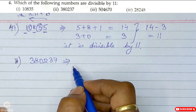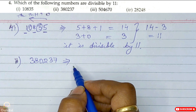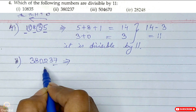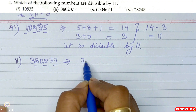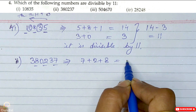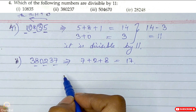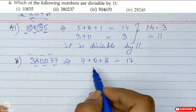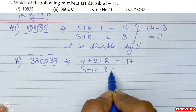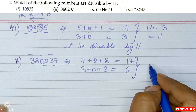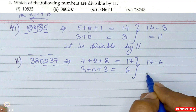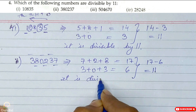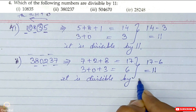For 380237, the digits at odd places starting from the unit place are 7, 2, and 8. So 7 plus 2 plus 8 gives us 17. After finding the even-place sum, the difference comes out to 11, so this number is also divisible by 11.